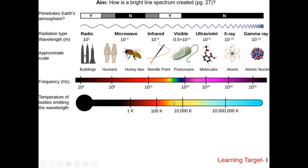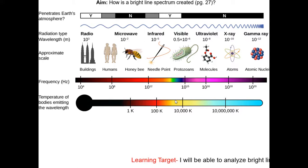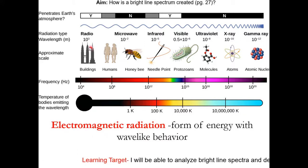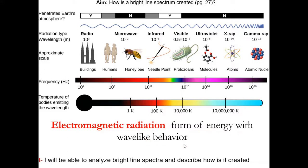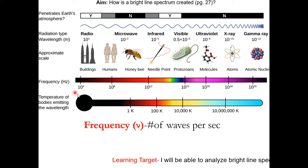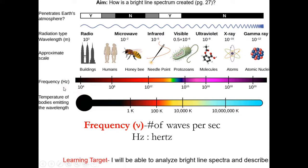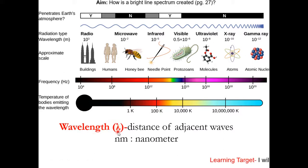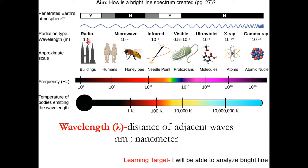The next page is an extension — this will not be on the Regents exam, but you might see these concepts on SAT2 chemistry. The first term is electromagnetic radiation. Here are some examples — it is basically a form of energy with wave-like behavior. Frequency, symbolized by the Greek letter nu (ν), is the number of waves per second. Gamma has a very high frequency compared to radio, which has a relatively low frequency. The unit of frequency is hertz. Wavelength, symbolized by lambda (λ), is the distance between adjacent waves, measured in nanometers. Radio waves are long while gamma waves are short.